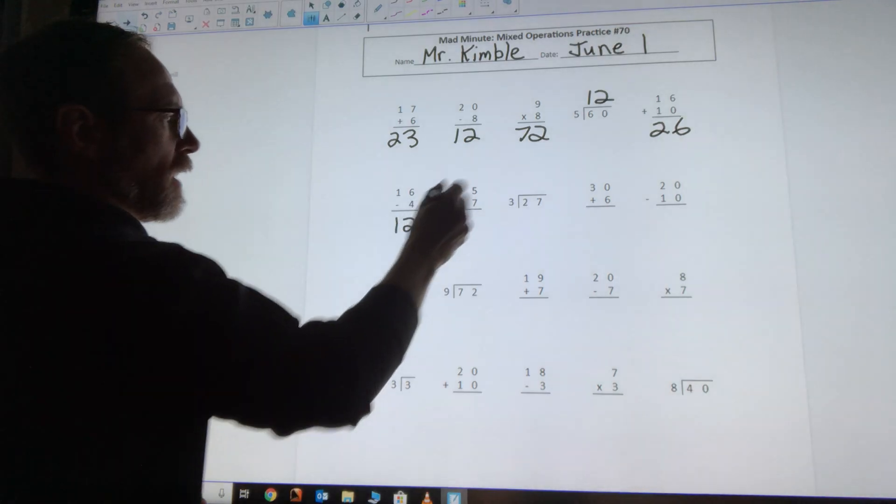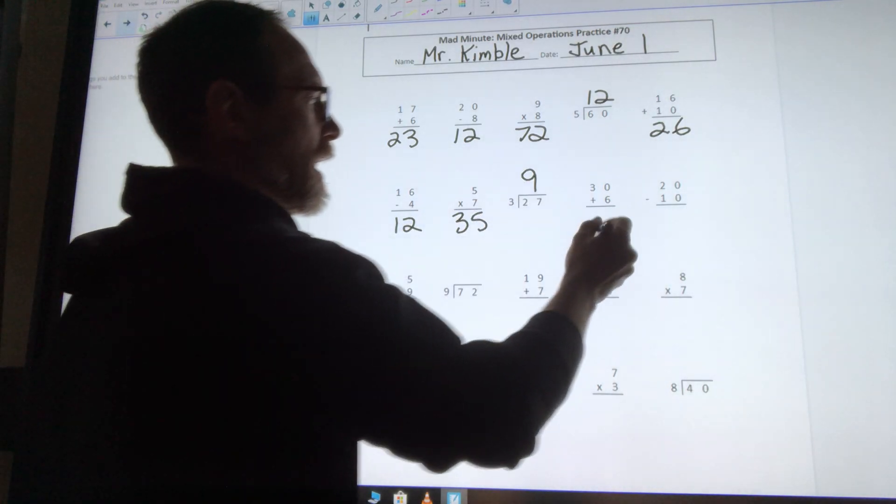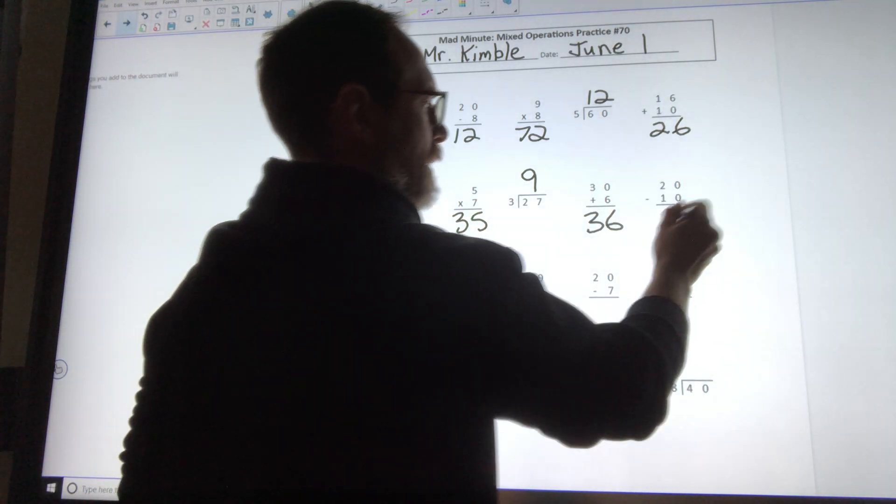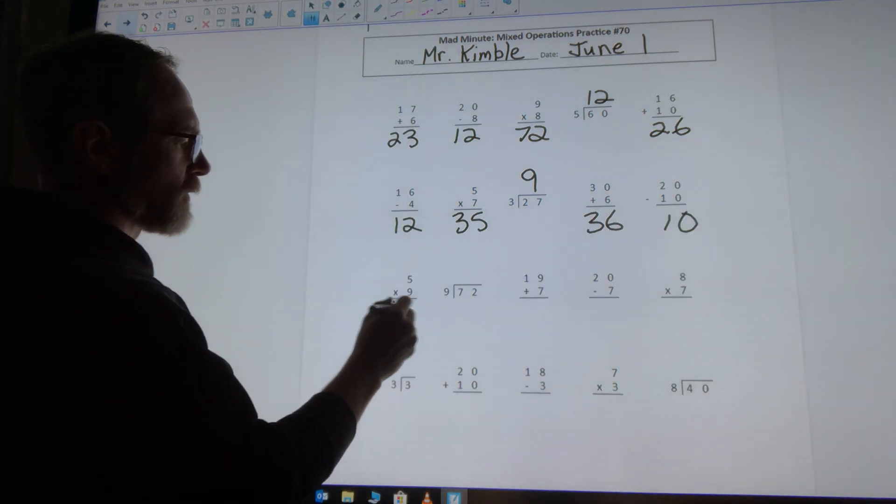16 minus 4 is 12, 5 times 7 is 35, 27 divided by 3 is 9, 30 plus 6 is 36, 20 minus 10 is 10, 5 times 9 is 45.